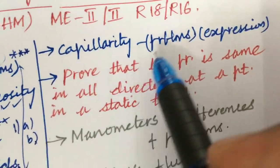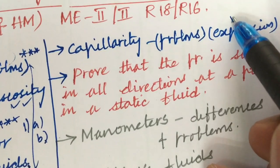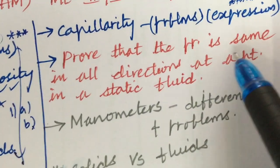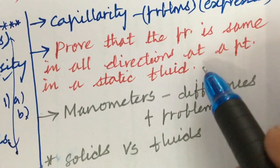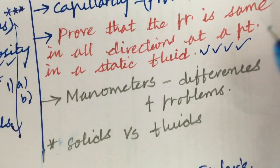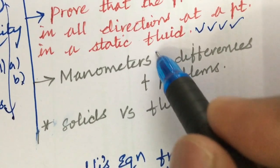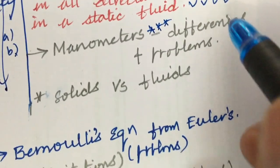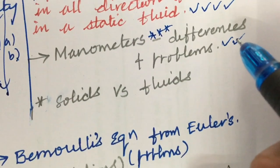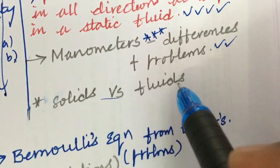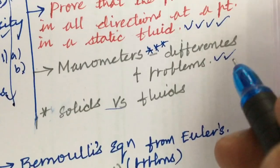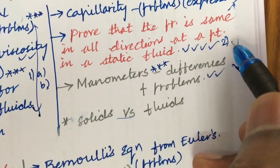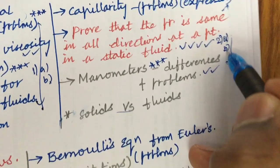Capillarity, the problems related to it, and the expression for capillary fall and rise is also a very important question. Proving that pressure is the same in all directions at a point in a static fluid is also one of the important gunshot questions. One more gunshot question is related to manometers — their differences and the problems related to manometers — which can be covered in 2B. Sometimes small definitions and the differences between solids versus fluids, as well as Newtonian and non-Newtonian fluids, may also be asked.